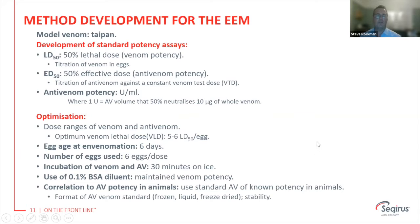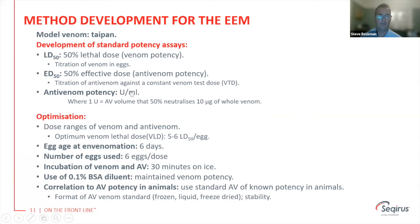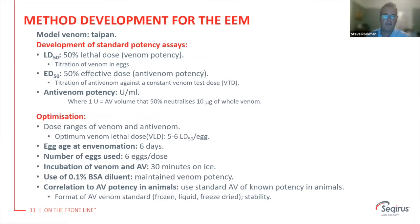From using embryonated eggs, we can determine the 50% lethal dose using standard terminology — or we can say 'viable dose.' By titrating venom into eggs, we can determine the ED50, which is the 50% effective dose of antivenom potency — titrating the antivenom against a constant venom test dose. We've done a great deal of optimization of this assay, with dose ranges of venom and antivenom, optimizing the venom lethal dose in day-five and day-six eggs. We use 6 eggs per dose, which gives us much greater statistical power compared to animal studies.